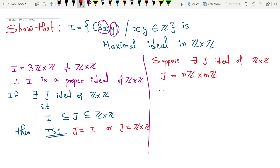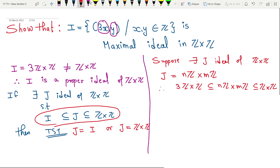Therefore, this 3Z×Z is a subset of nZ×mZ which is a subset of Z×Z. I am just using this I is a subset of J, J is a subset of Z×Z. I am just using it.